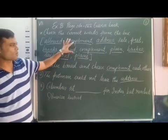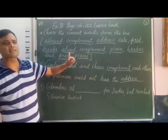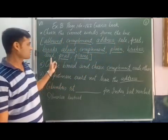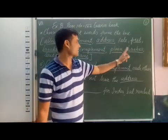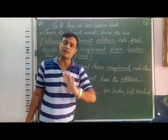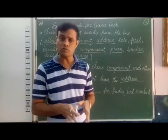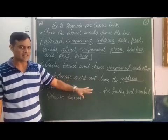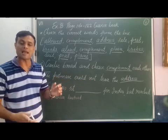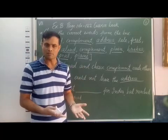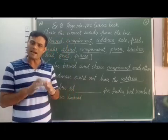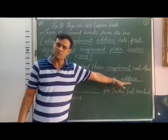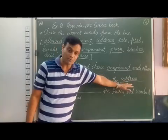Now students, if you see, we are given most of the words as homophones — only 'address' is given one time. The pairs are: allowed/aloud, complement/compliment, sell/sail, peel/peal, brakes/breaks, plain/plane. But address is given only once because it is a homonym — same spelling, same sound, but different meaning. In the earlier blank, 'address' meant to deliver a message: the prime minister will address the nation. Here, address means the location: the postman could not trace the address.